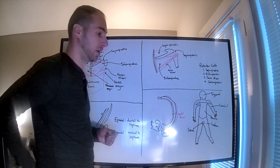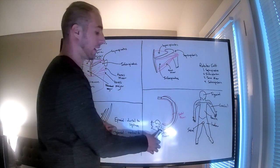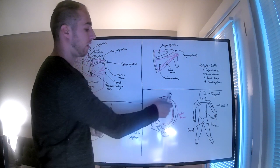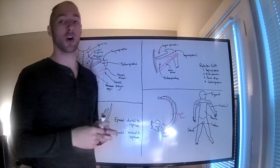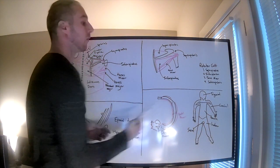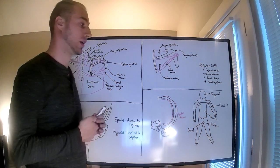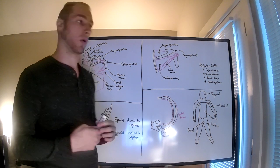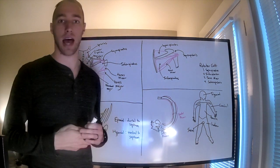The dorsal ramus will innervate the dorsal aspect of the skin, and the ventral ramus will innervate much of the lateral and then ventral aspect of the skin. This allows us to have dermatomes, and we know these dermatomes because we can identify pathologies based upon numbness or other nervous abnormalities.